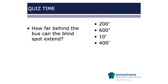How far behind the bus can the blind spot extend — 200 feet, 600 feet, 10 feet, or 400 feet? The blind spot can actually extend 400 feet beyond the rear of the bus. This completes the first part of our pre-trip inspection. We have dealt primarily with items on the outside of the bus, starting with leaks and the leaning of the bus, and progressing under the hood and then completely encircling the bus. That completes session number one of our pre-trip.